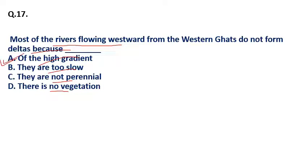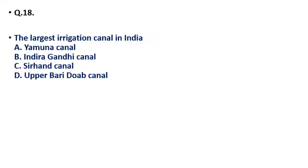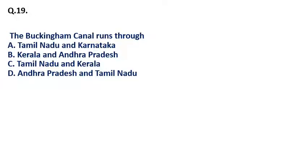Question 18: The largest irrigation canal in India is — (a) Yamuna Canal, (b) Indira Gandhi Canal, (c) Sirhind Canal, (d) Upper Bari Doab Canal? The correct answer is Indira Gandhi Canal — Indira Gandhi Canal is the largest irrigation canal in India.